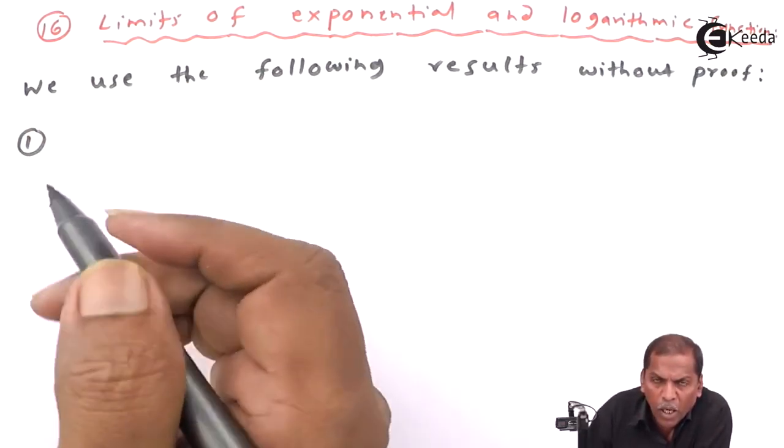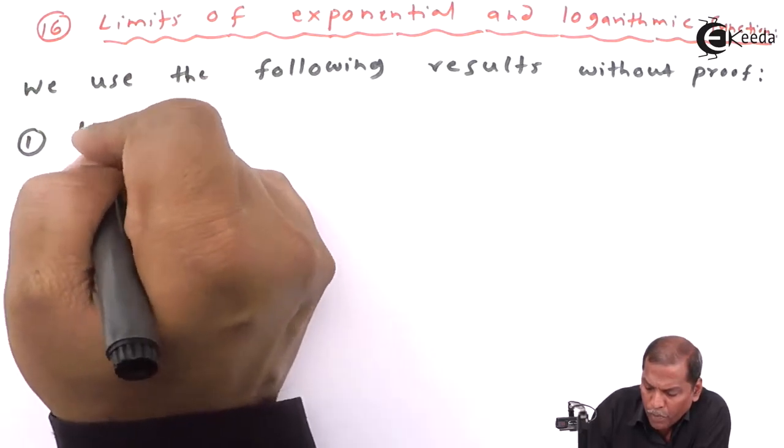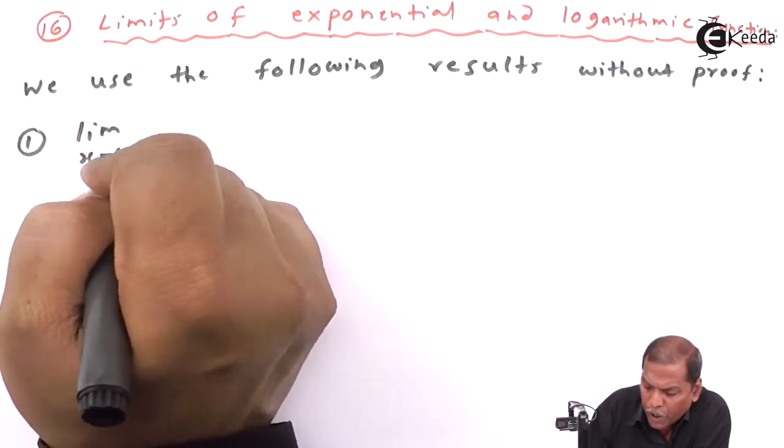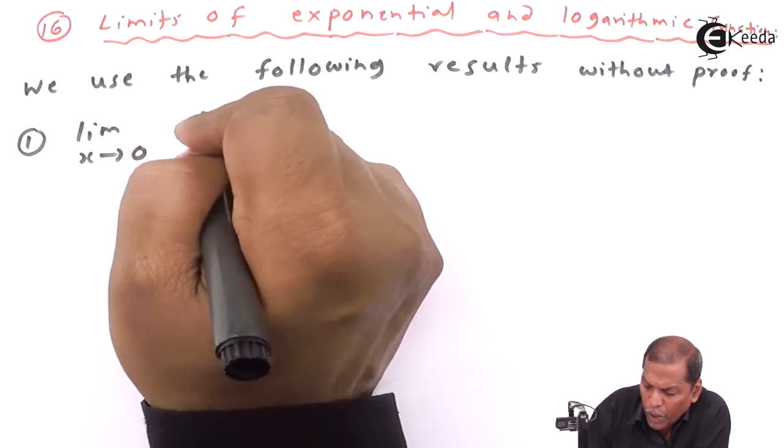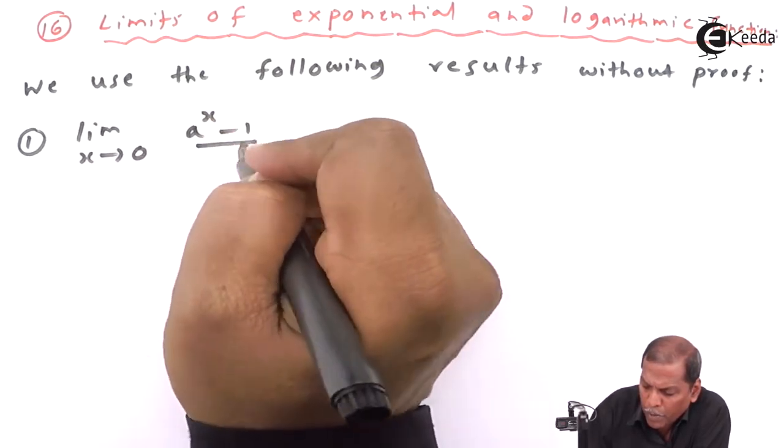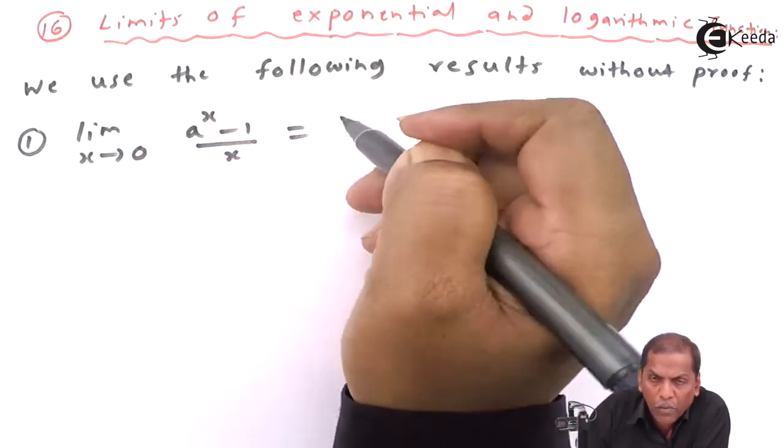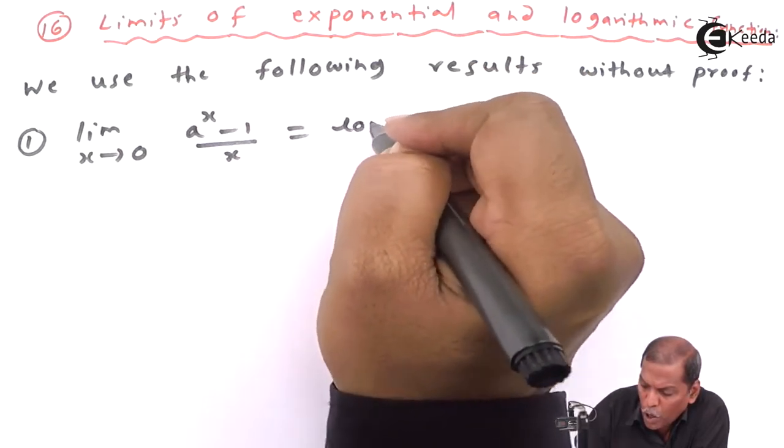Result number one is: limit as x approaches zero of (a^x - 1)/x equals log a.